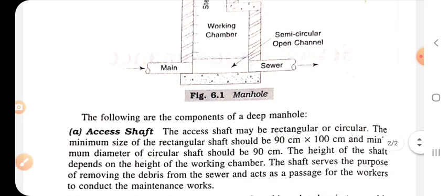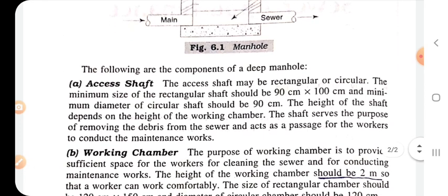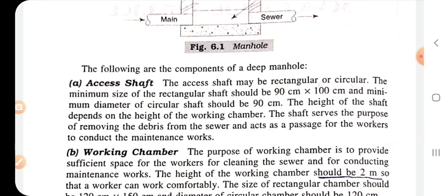The components of a deep manhole: the shaft may be rectangular or circular. The minimum size of a rectangular shaft is 90 cm × 100 cm, and the minimum diameter of a circular shaft should be 90 cm. The shaft serves the purpose of removing debris from the sewer and acts as a passage for workers to conduct maintenance and work.